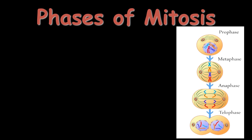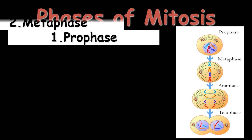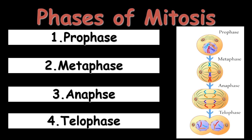The process of mitosis, also known as karyokinesis or nucleus division, is divided into four phases in sequence: prophase, metaphase, anaphase, and telophase. In each phase, the nucleus of the cell undergoes different changes to finally divide into two. During these processes, all the genetic materials and other organelles of the cell also divide and give rise to two daughter cells.